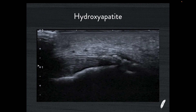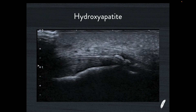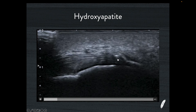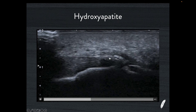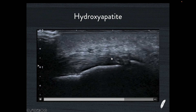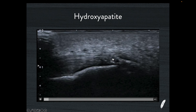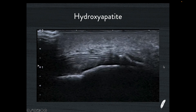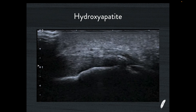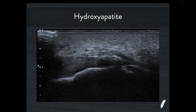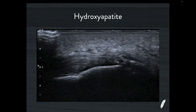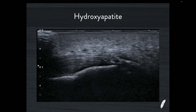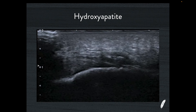Hydroxyapatite was another potential possibility, and this is what it looks like. However, what differs from CPPD is that hydroxyapatite comes directly from the enthesis — there's no way you'd find it stranded in the middle of the Achilles tendon. On plain radiograph, hydroxyapatite will show up with similar density to CPPD, but the location will be different. So we can rule this out as well.